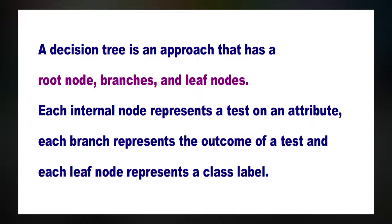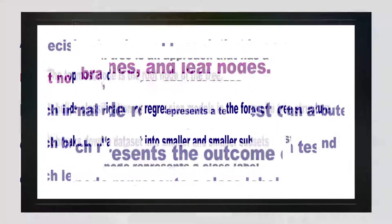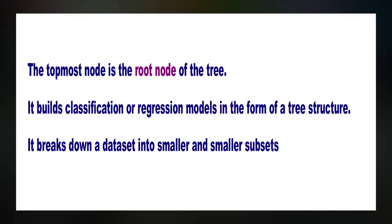The main idea of using decision tree is to create a training model which is used to predict the class of target variables by learning decision rules inferred from training data. A decision tree is an approach that has a root node, branches and leaf nodes. Each internal node represents a test on the attribute, each branch represents the outcome of a test, and each leaf node represents a class label. The topmost node is the root node of the tree.